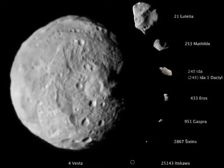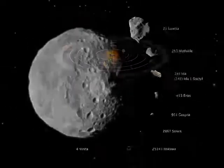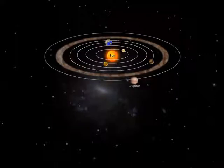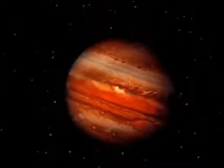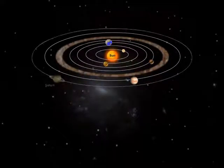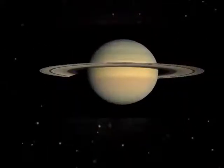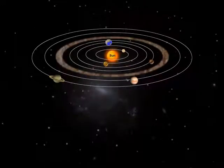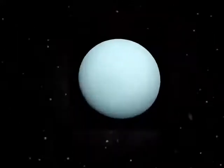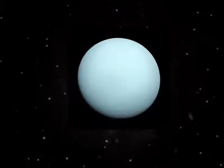Jupiter is the fifth planet from the Sun and by far the largest. Saturn is the second largest and sixth planet from the Sun. Uranus is the seventh planet and is the third largest.